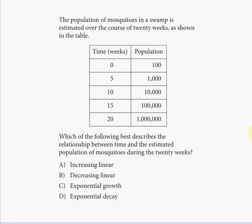Hello everyone, welcome to my free online tutorial for the new SAT math section. This is problem number 13, practice test for section 4, calculator allowed, found in the new SAT official study guide. The population of mosquitoes in a swamp is estimated over the course of 20 weeks as shown in the table. Which of the following best describes the relationship between time and the estimated population of mosquitoes during the 20 weeks?